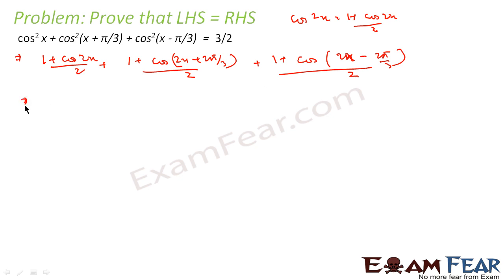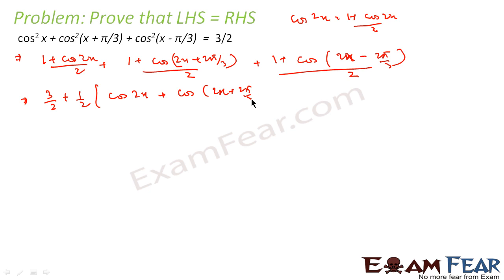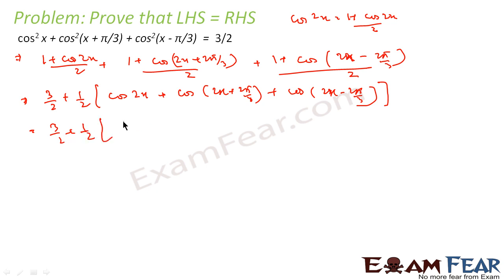So what we get is 1/2 + 1/2 + 1/2, giving us 3/2, plus (1/2)[cos 2x + cos(2x + 2π/3) + cos(2x − 2π/3)]. This becomes 3/2 plus a sum involving cos(2x + 2π/3) and cos(2x − 2π/3).